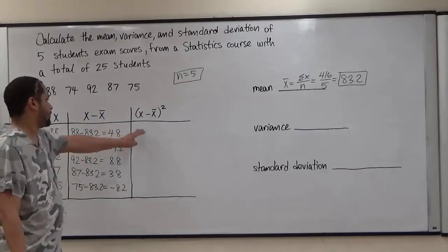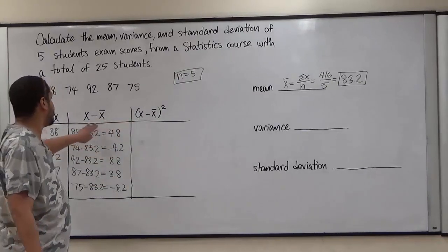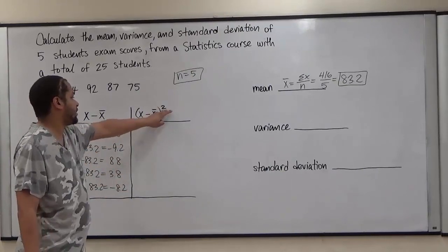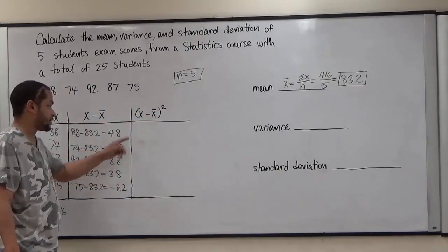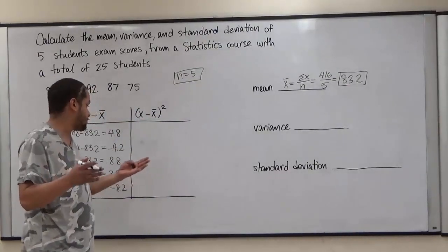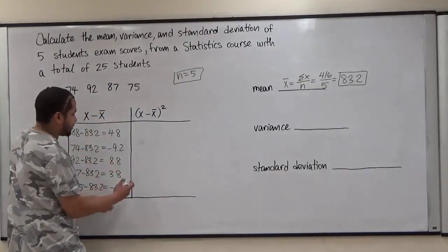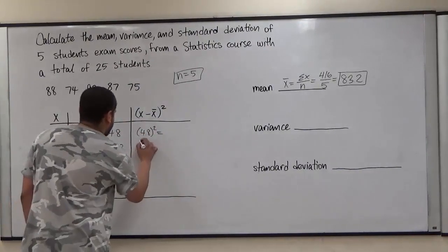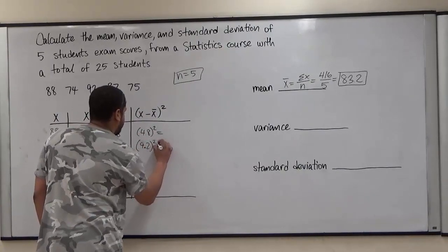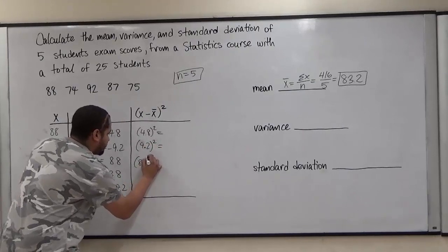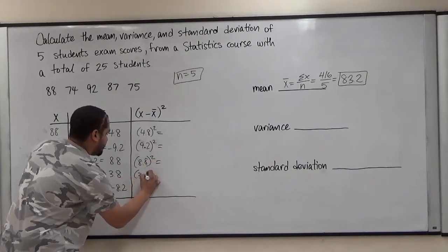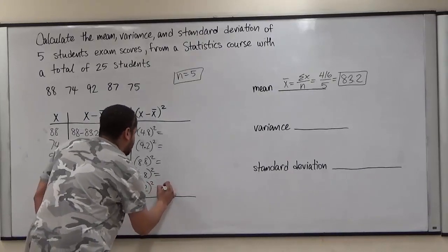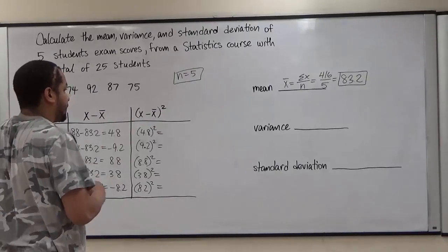Our next goal is to take the sample-minus-mean values and square them. We can disregard the negative symbols because when you square a negative, negative times negative is positive — so we're just going to take the absolute values of each result. We're going to square 4.8, square 9.2, square 8.8, square 3.8, and also square 8.2.